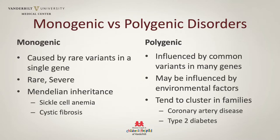When we think about monogenic versus polygenic diseases, we think of monogenic diseases as those caused by rare variants in a single gene. These diseases tend to be rare, and the genetic effect is relatively severe. These often have a traditional Mendelian inheritance like autosomal dominant or autosomal recessive, and examples include sickle cell anemia or cystic fibrosis.